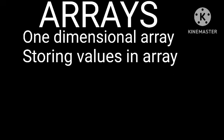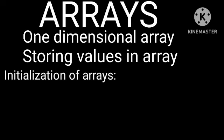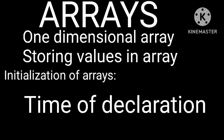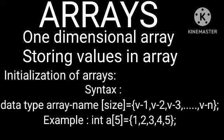Initialization of arrays: an array can be initialized at the time of declaration. The syntax is: data_type array_name[size] = {value1, value2, value3, ..., valueN}. For example: int a[5] = {1, 2, 3, 4, 5}.